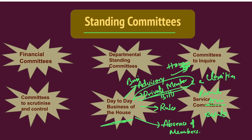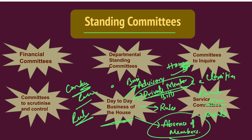The Rules Committee considers matters of procedure and the conduct of business in the house and recommends necessary amendments or additions to the rules of the house. The Committee on Absence of Members considers applications from members for leave of absence from sittings of the house and examines cases of members who have been absent for 60 days or more without permission. This is also a special committee of Lok Sabha consisting of 15 members.